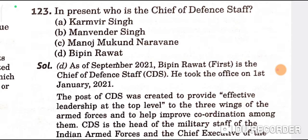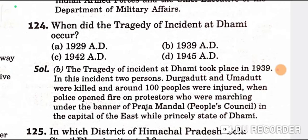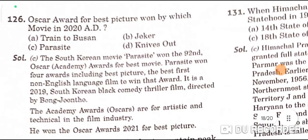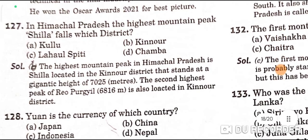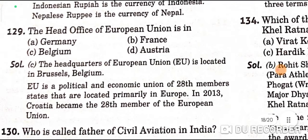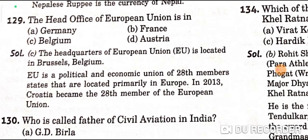The tragedy at Dhami occurred in 1939 — B is the correct option. Sola Singhri Dhar is situated in Una district of Himachal Pradesh — B is the correct option. The Oscar award for best picture in 2020 was won by Parasite — C is the correct option. The highest mountain peak Shilla falls in Kinnaur district — B is the correct option. Yuan is the currency of China — B is the correct option.